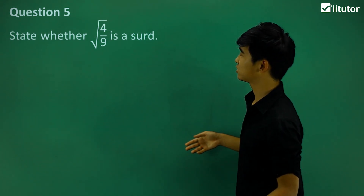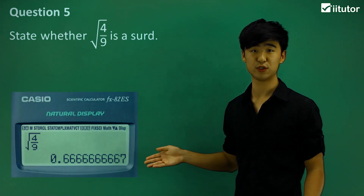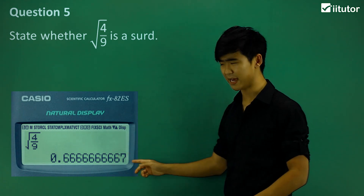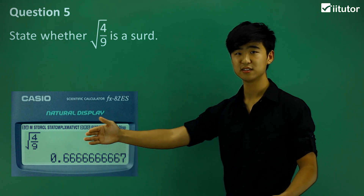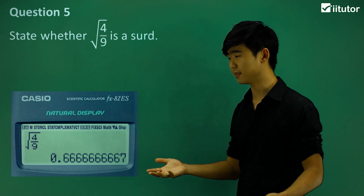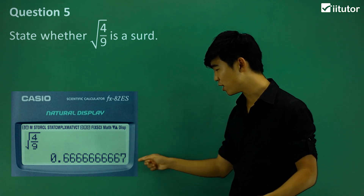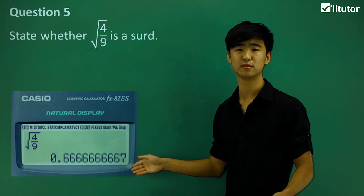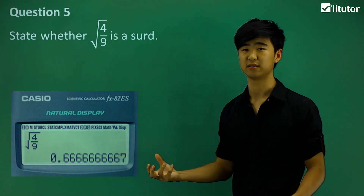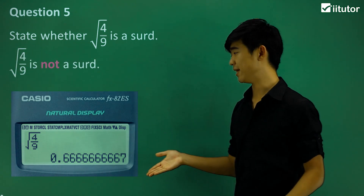We have the square root of 4 over 9 — we have some sort of fraction. Let's put it into our calculator. We have something similar to before: 0.66666, and it ends with a 7. Well, it's endless, but does it have a specific pattern or not? Now that 7 is confusing — it's because it's just 0.666 all the way, but they can't fit all the numbers so they're just rounding it up to a 7. So to summarise: yes, this is endless, and it does have a specific pattern. So this is not a third. The square root of 4 over 9 is not a third.